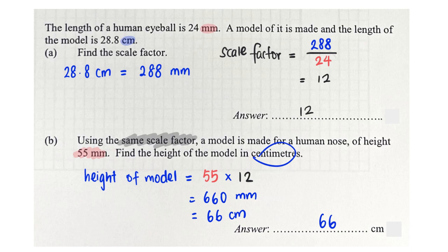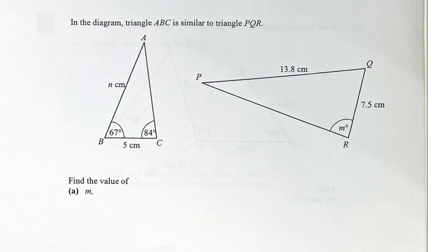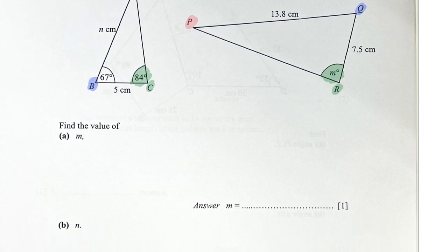Let's continue to the next question. Hello everyone, we are given two similar triangles — angle A corresponds to angle P, B corresponds to Q, and C corresponds to R. From here I can get the value of m easily: m is simply 84, because we are talking about an angle value so no units are needed.